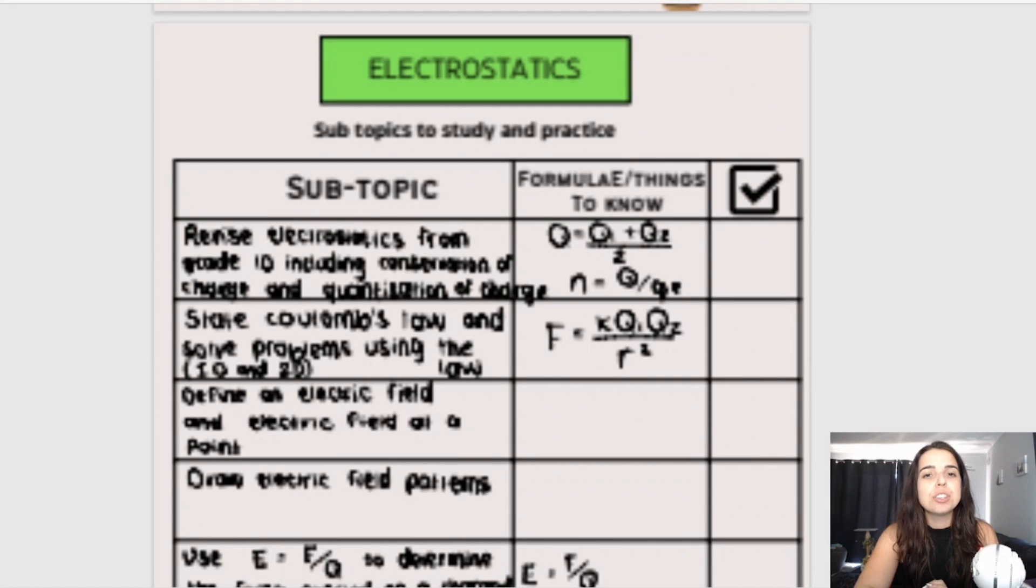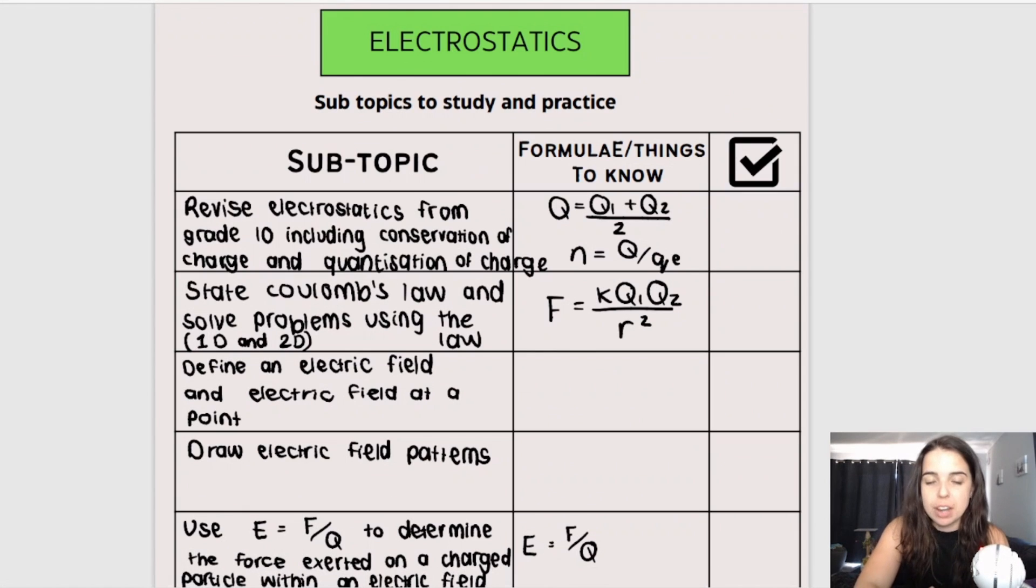Okay, we spoke about Newton's Law of Universal Gravitation. Here's your data sheet. And then we've got electrostatics right at the end of the term. Now, what makes electrostatics nice is that it builds nicely on grade 10 electrostatics. So you can see here for subtopics, I included revised electrostatics from grade 10, including the conservation of charge. So that's this first formula over here, and quantization of charge, which is the second formula over here. Now, what your ATPs don't tell you is that you learned these things in grade 10. And your teacher may not recap it in grade 11 or grade 12, but they test it in grade 11 and grade 12. So you need to know that.